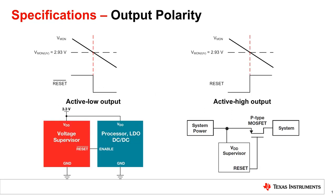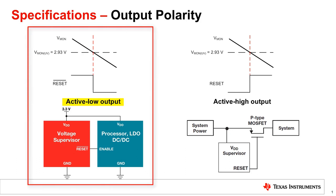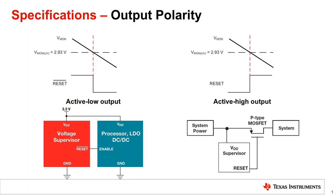So far in this video, we have only shown active low output polarity supervisors. In active low supervisors, when an under voltage condition is detected, the supervisor will pull its high output low. Depending on your system requirements, however, an active high output polarity supervisor may be needed.